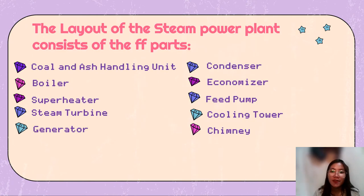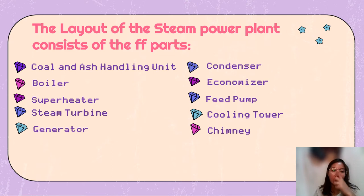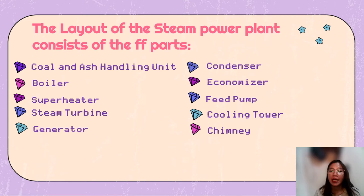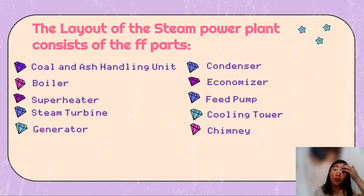The layout of the steam power plant consists of the following parts: the coal and ash handling unit, boiler, superheater, steam turbine, generator, condenser, economizer, feed pump, cooling tower, and the chimney.